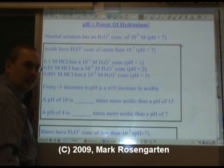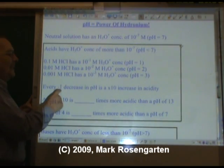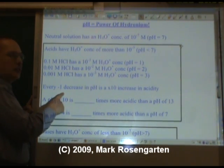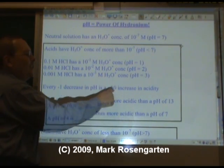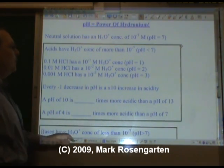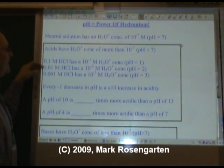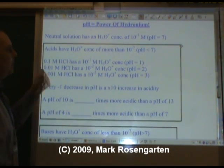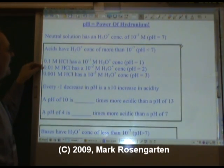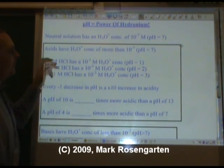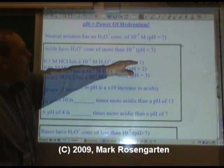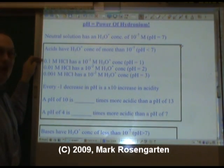Every minus 1 decrease in pH, therefore, is a tenfold increase in acidity. Notice that when we go from a pH of 3 to a pH of 2, the acid gets 10 times stronger. We go from a pH of 2 to a pH of 1, it's again 10 times stronger. If the difference is 2 in pH, then it's 100 times stronger, 2 powers of 10.